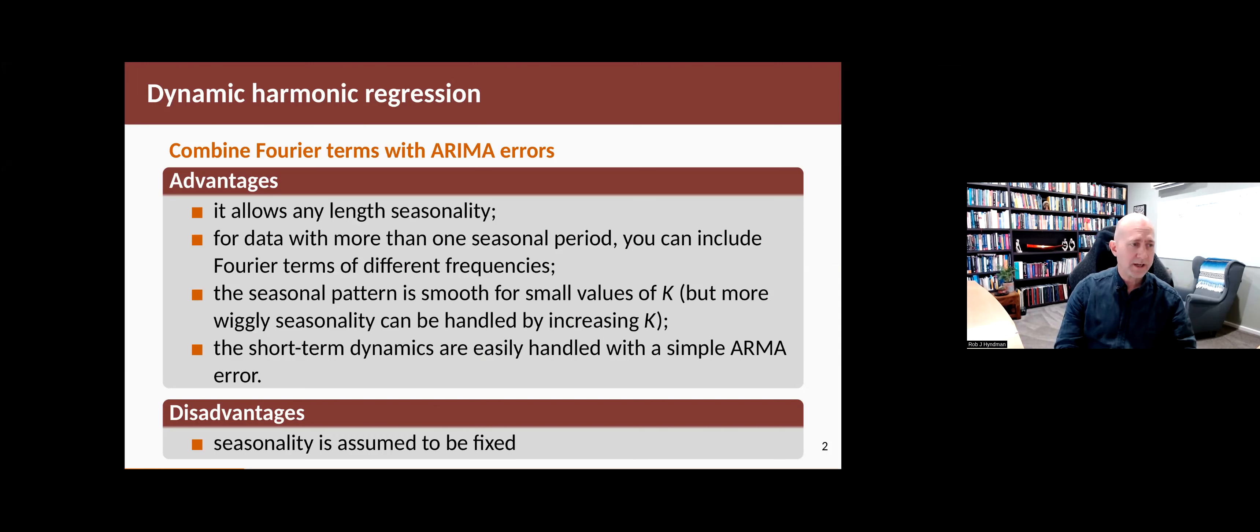You can deal with data with more than one seasonal period by putting Fourier terms of different frequencies. And it means that anything, any of the short-term dynamics that are not handled by the regression terms can be handled with a relatively simple error.